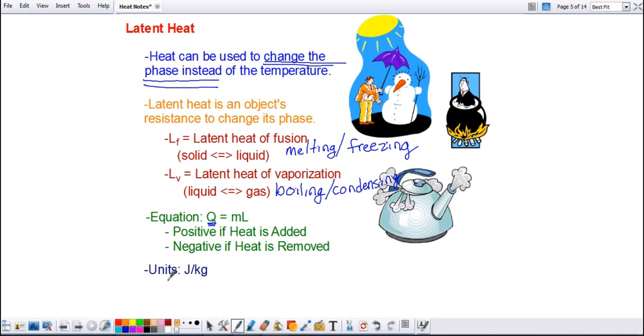So let's just give you an example here. Let's look at water. Water has a latent heat of fusion of 333,000 joules per kilogram. So what this means is that if I want, if I have an ice cube, and I want to melt it, I need to add heat.